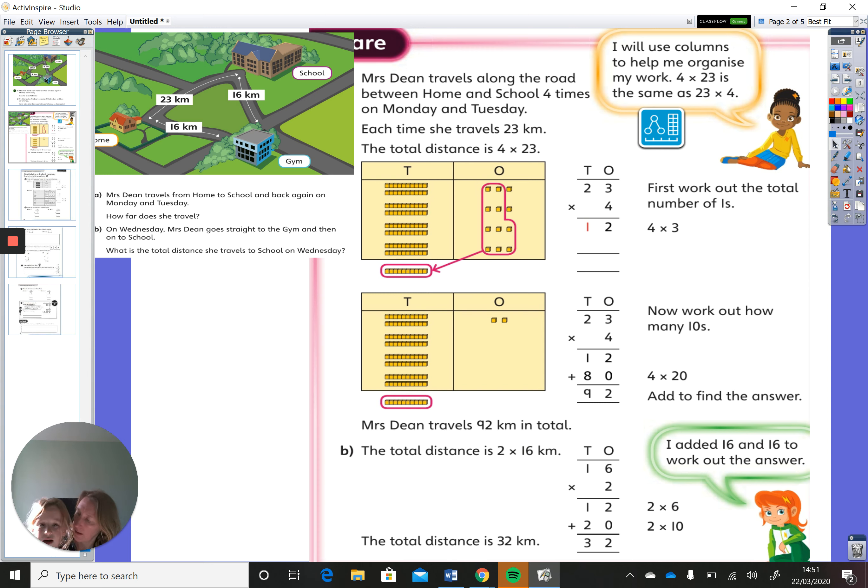2 times 6 is? Wait, 12. Good, and then? Whoopsie! Don't worry, don't worry. 2 times 10 is? 20. And then we need to add that together. Remember, that's our last step. So what's 20 and 12? 32. 32, well done.